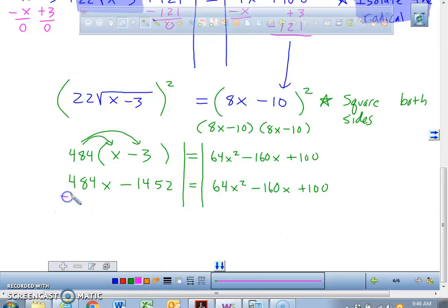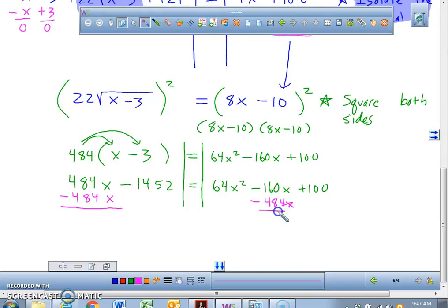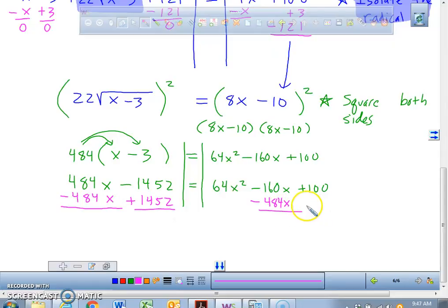So what we're going to do is we're going to take away 484x from both sides and add 1452 to both sides. So now we have zero equals 64x squared minus 644x plus 1552.